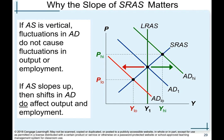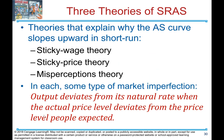When aggregate supply slopes upward, shifts in aggregate demand do affect output and employment. There are three theories explaining why short-run aggregate supply is upward sloping: the sticky wage theory, the sticky price theory, and the misperceptions theory. In each, some type of market imperfection causes output to deviate from its natural rate when the actual price level deviates from the price level people expected.